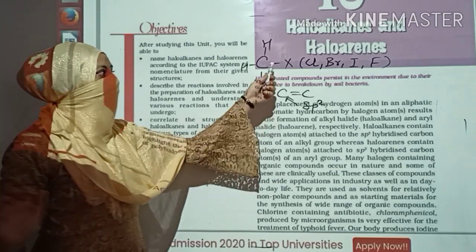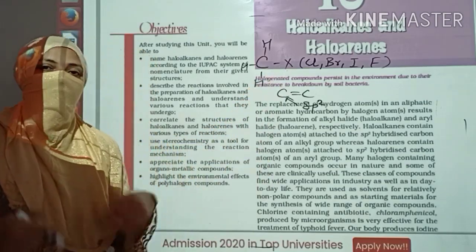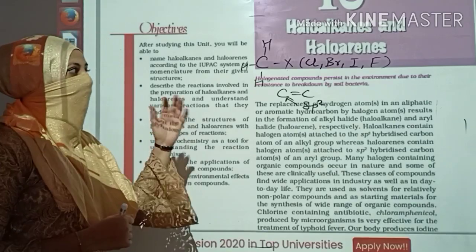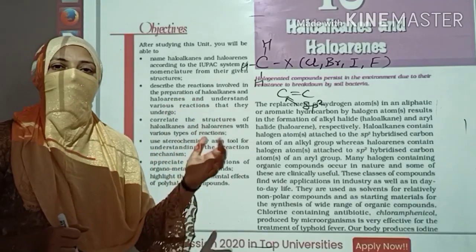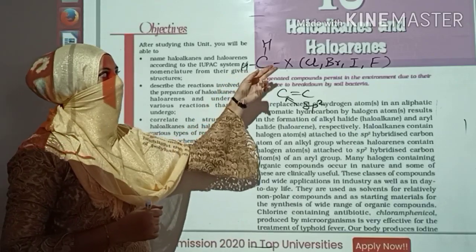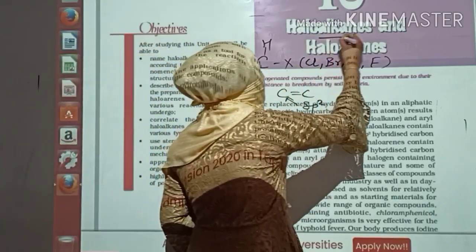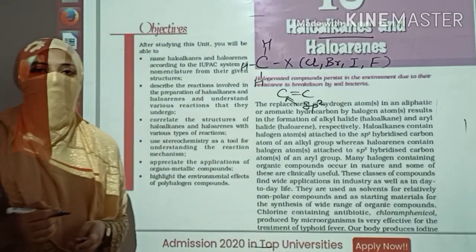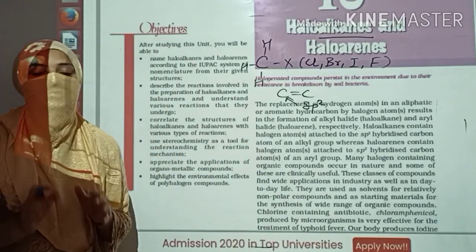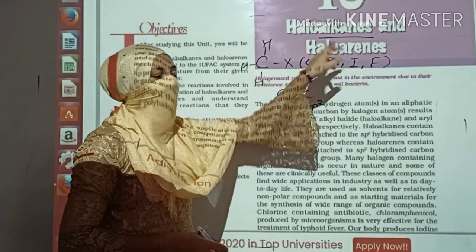So when we talk about the replacement of hydrogen, one or two hydrogens are replaced by your X — that may be chlorine, bromine, or iodine — then we say that it is your haloalkane. You have to remember only alkanes. We are not talking about other substances; we are focusing mainly on alkanes.